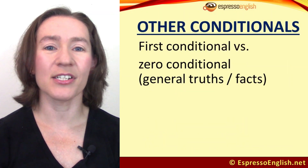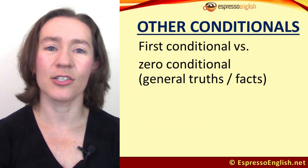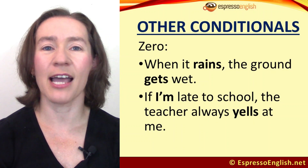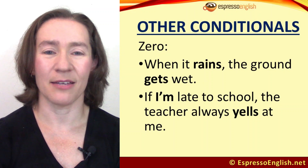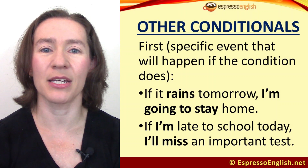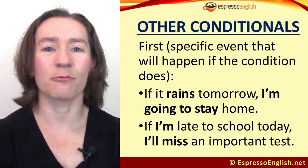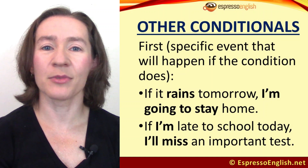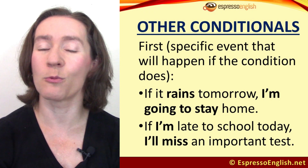Let's wrap up by comparing the first conditional to other conditional forms. The zero conditional describes general truths and facts — both the condition and the result are in the simple present. 'When it rains, the ground gets wet' is a general fact. 'If I'm late to school, the teacher always yells at me' — this always happens. But the first conditional describes a specific event that will or might happen in the future: 'If it rains tomorrow, I'm going to stay home' — not always, but specific to tomorrow. 'If I'm late to school today, I'll miss an important test' — a specific instance.